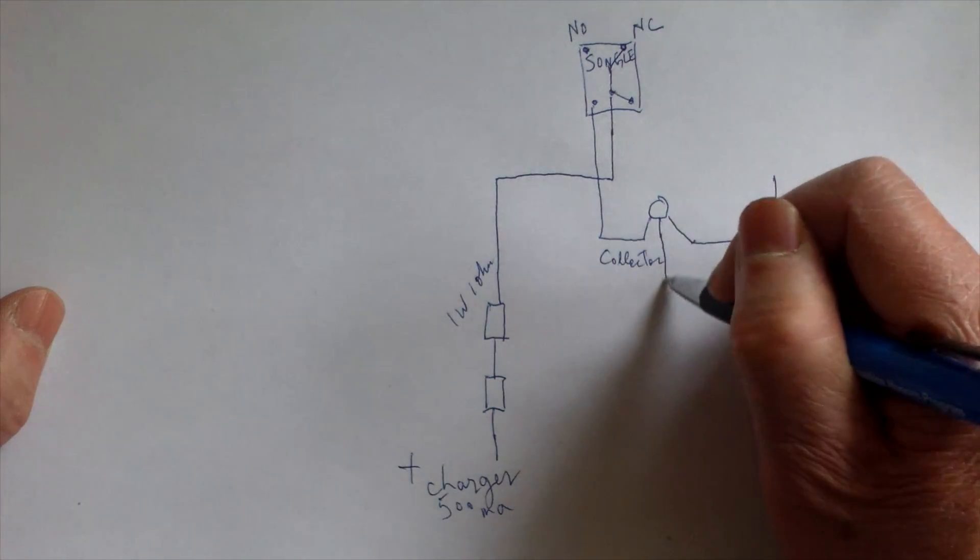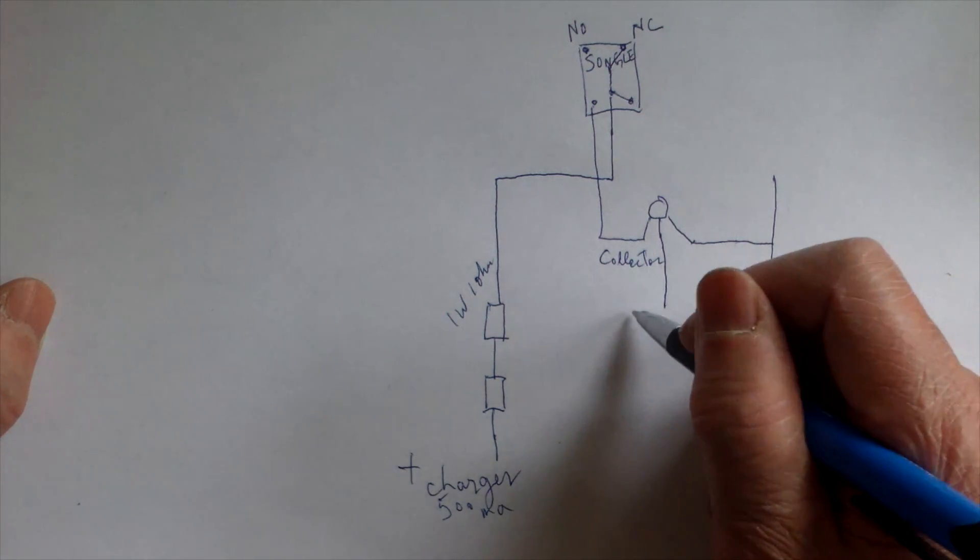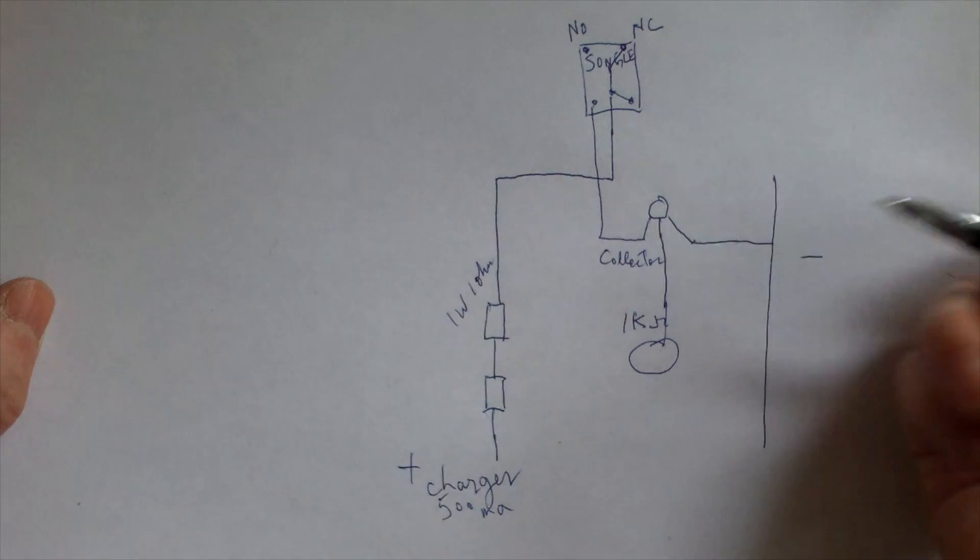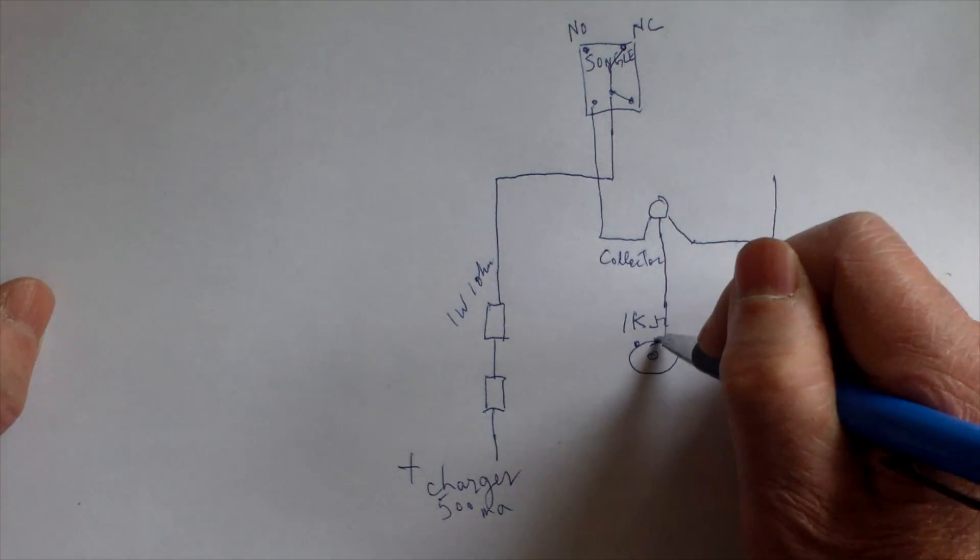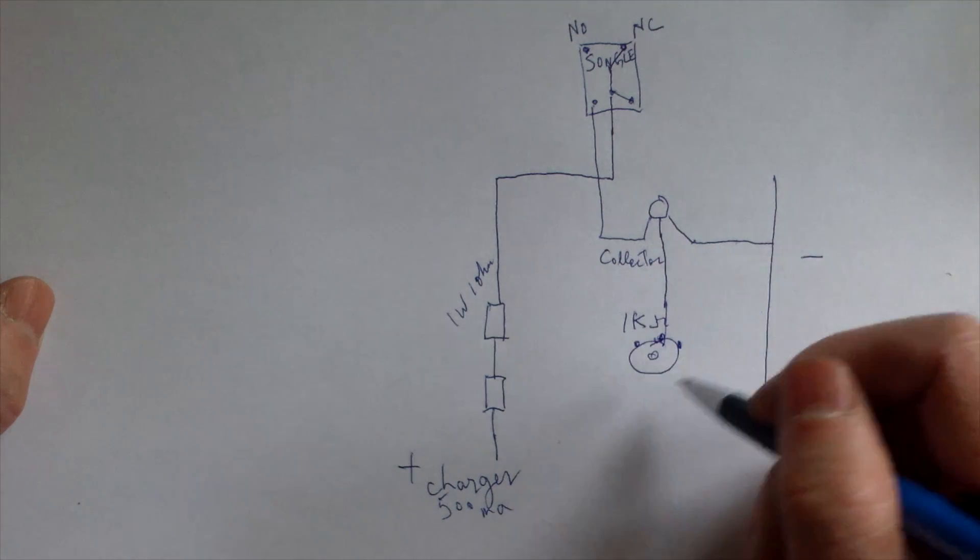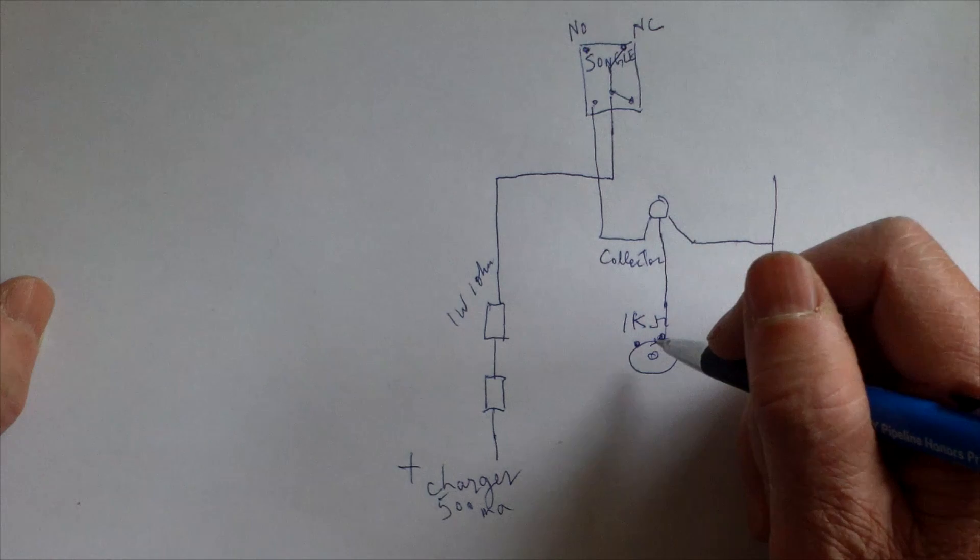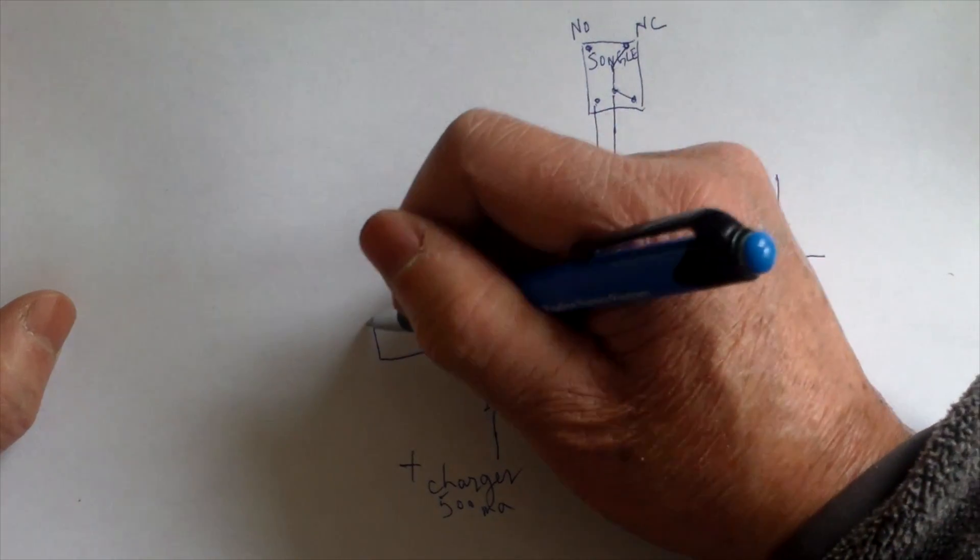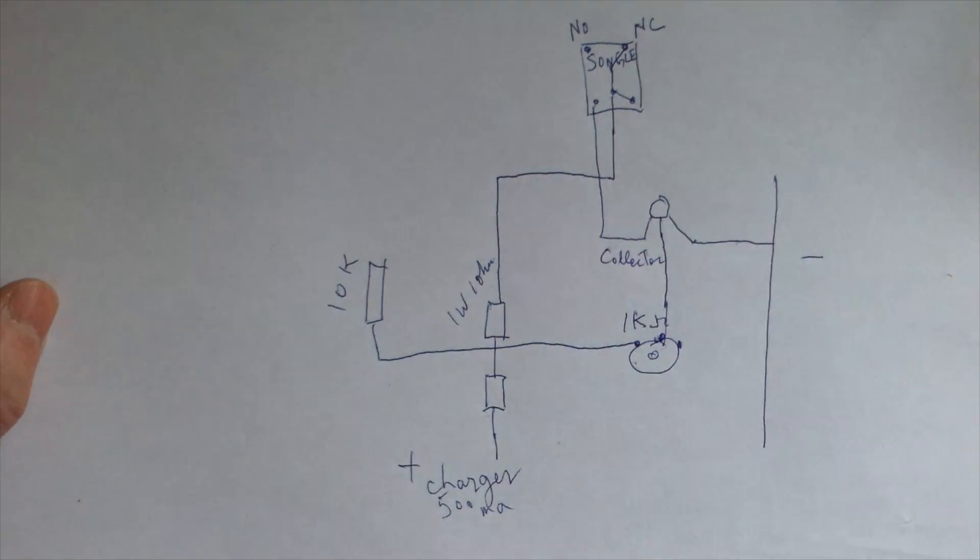The base of your transistor connects to a potentiometer, it's a 1k ohm potentiometer. There's a knob here that you can turn with three terminals, so the base connects to the middle terminal. The terminal here on the left side is connected to a 10k resistor.